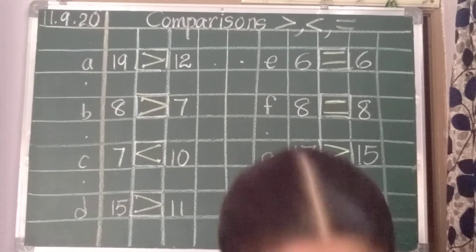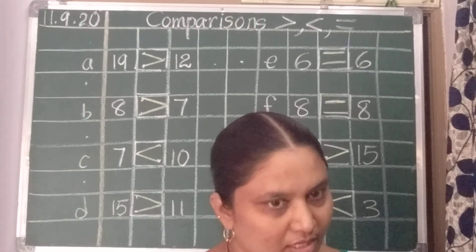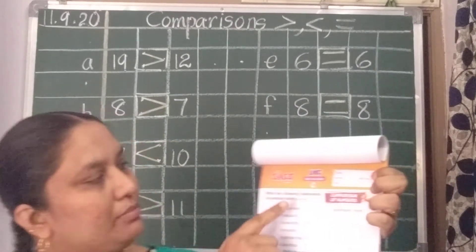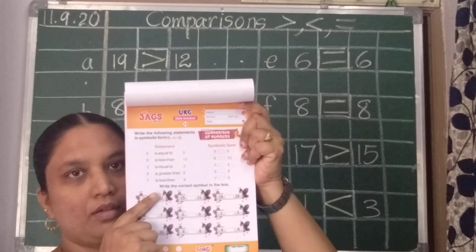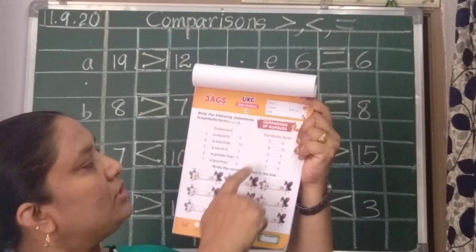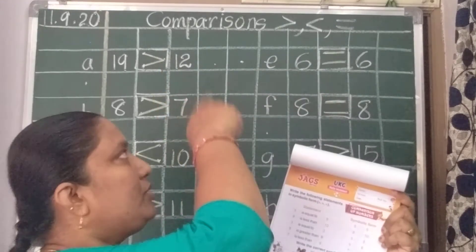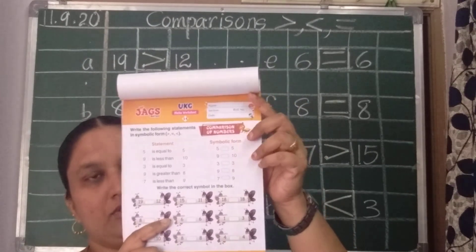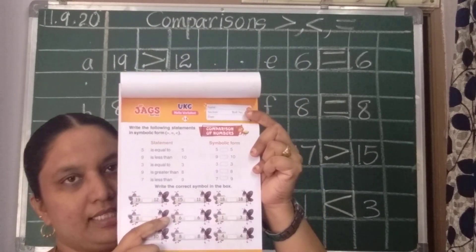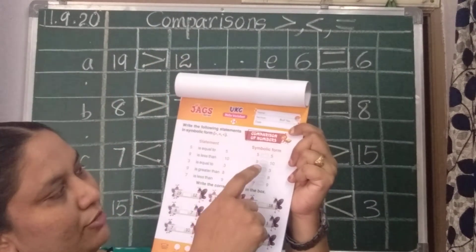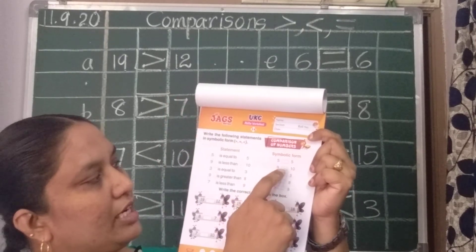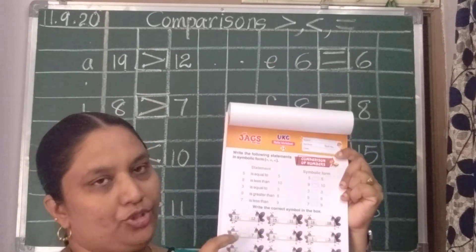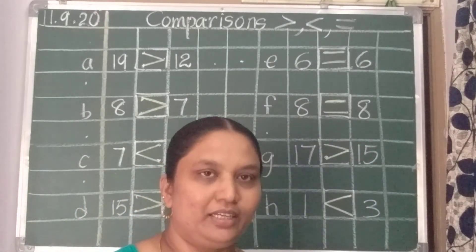Hope you have understood children. See children, after doing this in that notebook, this is your worksheet book. Page number 14. Here also. Same. Hope you have understood. Where the big number will come, the crocodile mouth will be open to that side. So, this page you have to do. 5 is equals to 5. 9 is less than 10. Like that. This page you should do. Okay children. Goodbye.